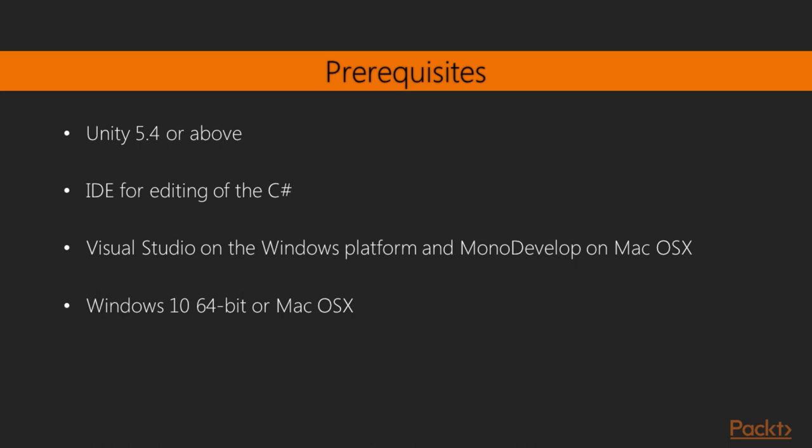This step-by-step video tutorial will teach you how to build a multiplayer RPG. You will explore the core concepts of the typical strategies you might need to build a complete game. All sections require Unity 5.4 or above. We will also need an IDE for editing C-sharp — this can be done using any text editor, but it is recommended to use Visual Studio on Windows or MonoDevelop or Code on Mac OS X.